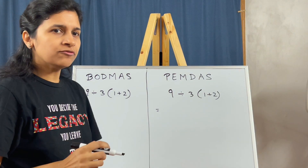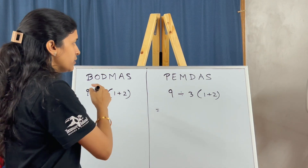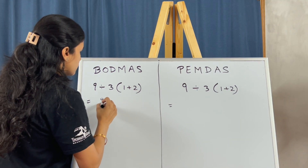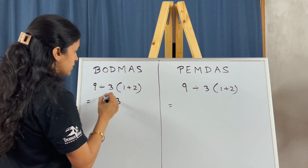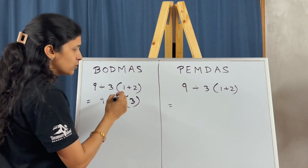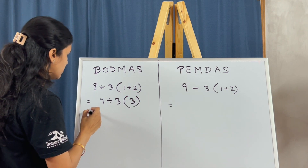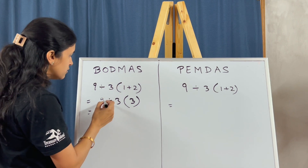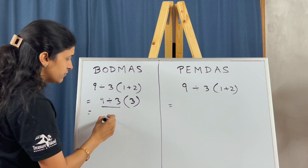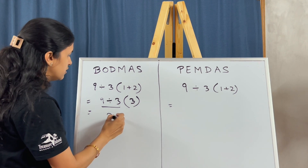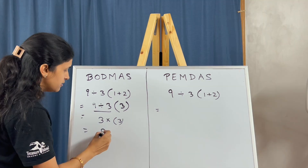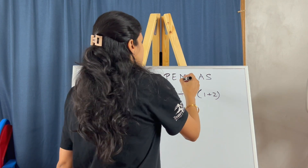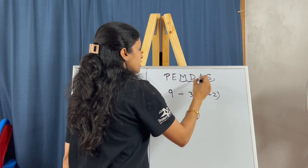Let's solve the same equation with both BODMAS and PEMDAS. Starting with BODMAS: brackets first — 1 plus 2 equals 3. Next is Order of Power — none here. Then Division: 9 divided by 3 equals 3, multiplied by 3 equals 9. So the result from BODMAS is 9.